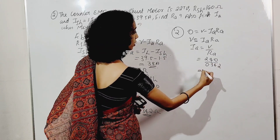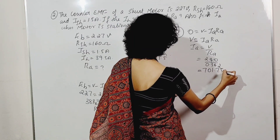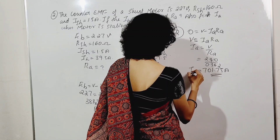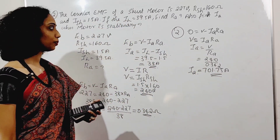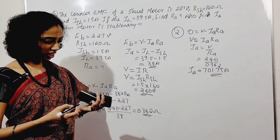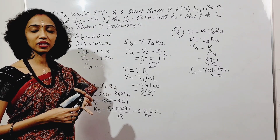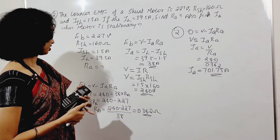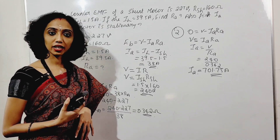Therefore IA equals V divided by RA, which is 240 divided by 0.342, giving approximately 701.75 ampere — that is IA. That is not a simple question; it is a tricky calculation.